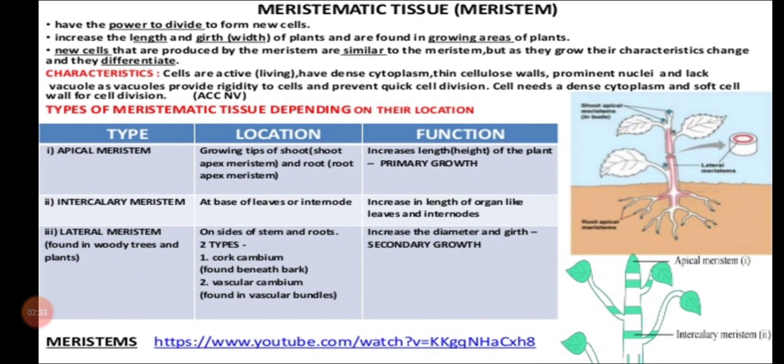First, write the definition for meristematic tissue. Meristematic tissue means these meristematic tissues alone have the power to divide — only they have the power to divide to form new cells. Why? Because in meristematic cells only, we can see a greater number of cytoplasm.